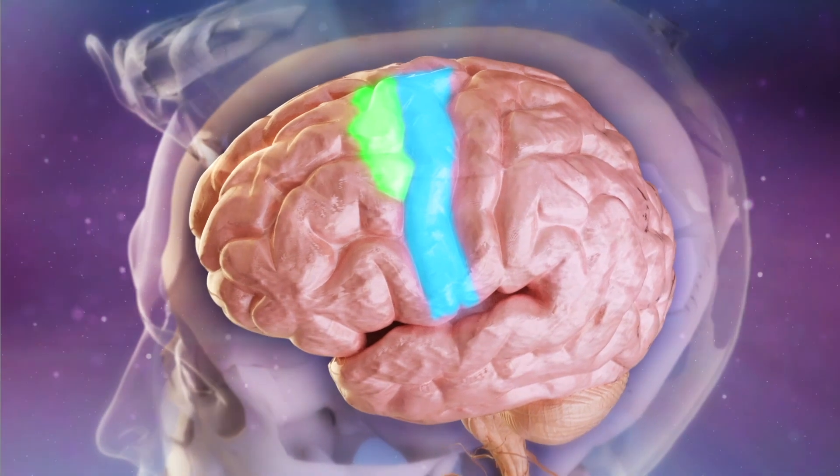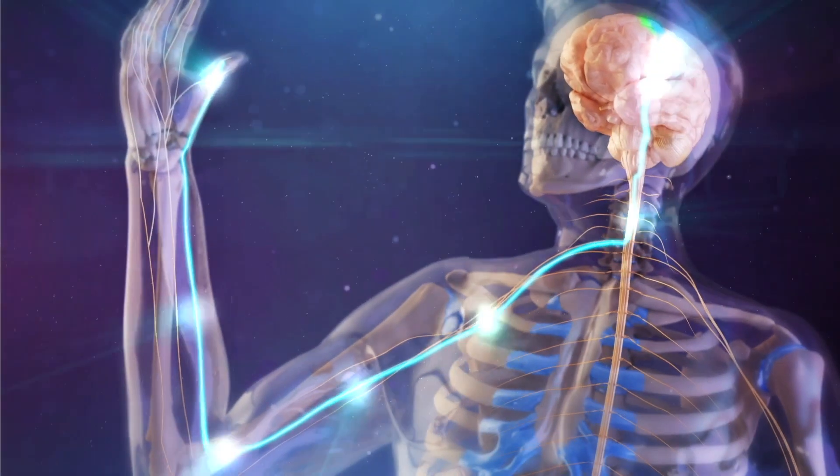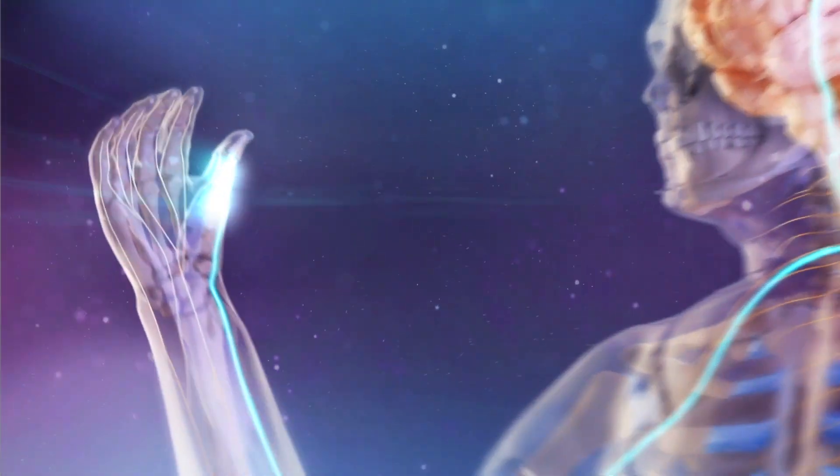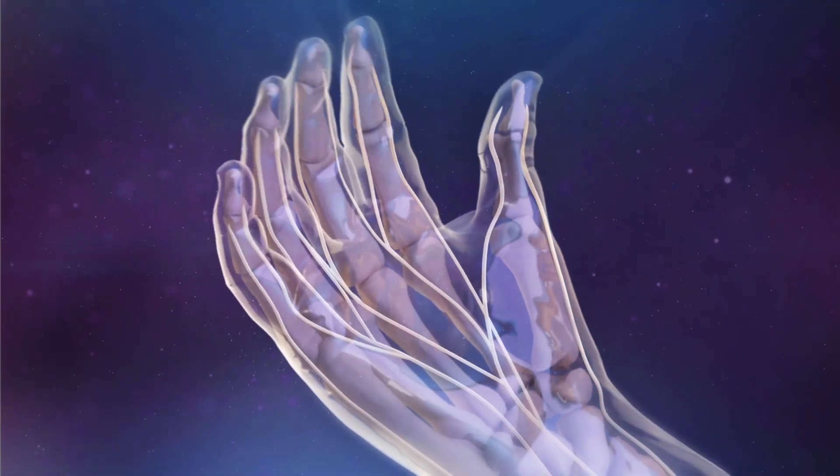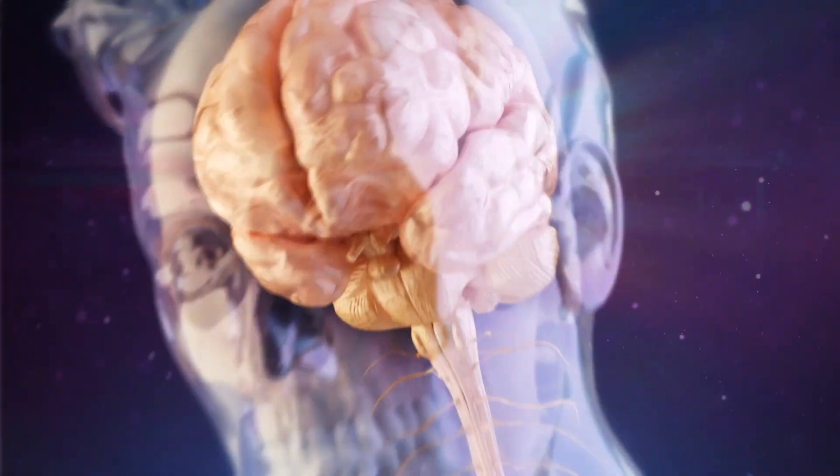The muscles in the body are controlled by our brain's motor cortex, and it's typically understood that one side of the brain controls the opposite side of the body. When one side of the brain is injured from a stroke, it may leave the person paralyzed on the opposite side.